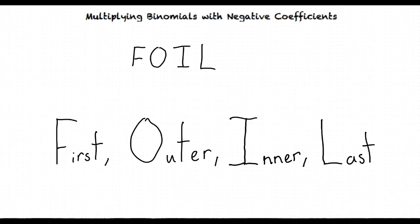Today we'll be going over how to multiply binomials with negative coefficients. For this topic, we'll be using the FOIL system, which stands for First, Outer, Inner, Last.